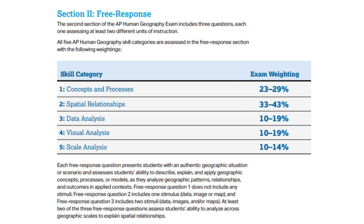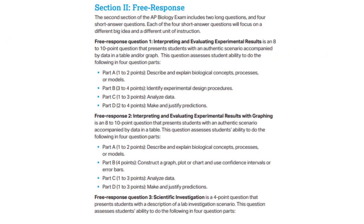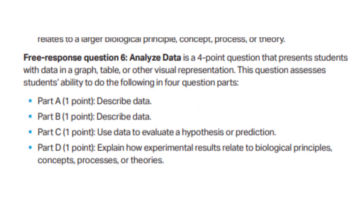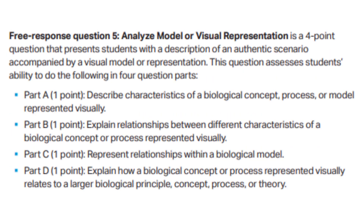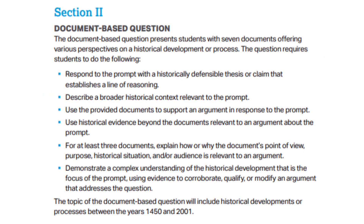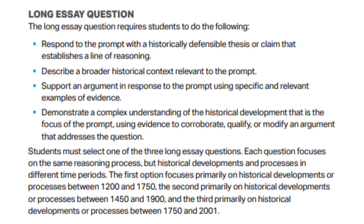The College Board provides a breakdown of how much each skill is emphasized. For AP Human, concepts and processes are tested more on the exam. For AP Computer Science A, code testing and documentation are each tested the least, at around 12 to 18%. The documents also give a breakdown of what FRQs will look like. For AP World, it tells you that you won't see a DBQ on units 1 and 2, and provides the necessary skills to earn all the points on the DBQ, MCQ, SAQ, and LEQ. For the LEQ, you get three choices, each possibly from a different time period.